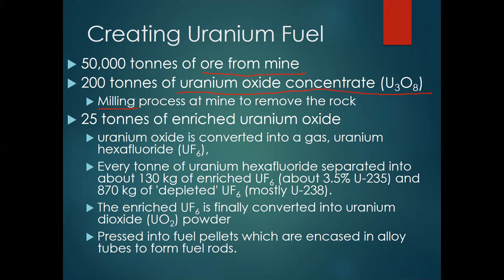After the milling gets the rock away from the uranium oxide, we go into enrichment. Once it's gone through the centrifuging process, we end up with about 130 kilograms of enriched uranium UF-6. This is enriched because it now contains more U-235 than a natural sample would. The enriched uranium hexafluoride is then converted into a solid — uranium dioxide, UO2. This powder is then made into the fuel pellets you saw in the last slide.